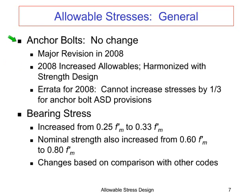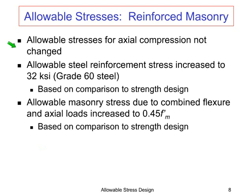Going through allowable stresses and some of the changes: for anchor bolts, there was actually no change to allowable stresses from 2008 to 2011. There had been a major revision in the 2008 MSJC where anchor bolt provisions were harmonized with strength design. We actually issued an errata for the 2008 code clarifying that allowable stresses for anchor bolt design should not be increased by one-third using the 2008 provisions. We increased our allowable bearing stress from one-quarter F'm to one-third F'm, and also increased the nominal strength for bearing based on looking at other codes. The allowable stress for axial compression has not changed, as we didn't feel we had the data to support that.